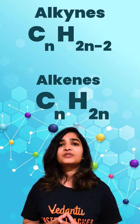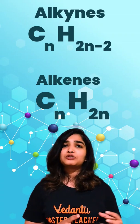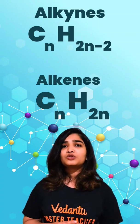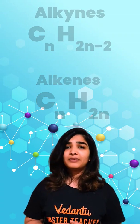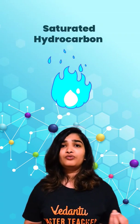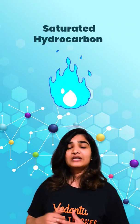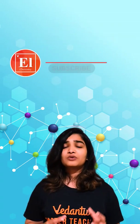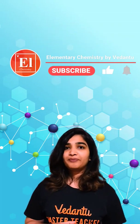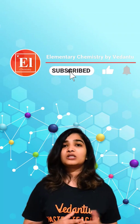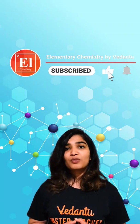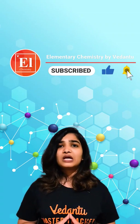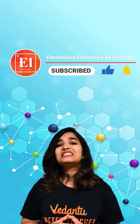There are a few tests that can help us distinguish between saturated and unsaturated hydrocarbons in the lab. The first one: saturated hydrocarbons burn with a blue flame, whereas unsaturated hydrocarbons give out a sooty flame. Saturated hydrocarbons will not react with bromine water, whereas unsaturated hydrocarbons decolorize bromine water.